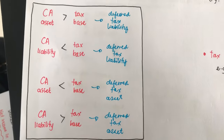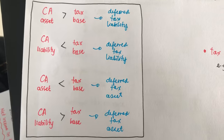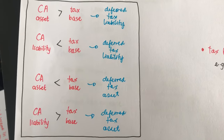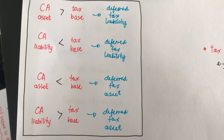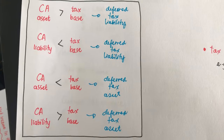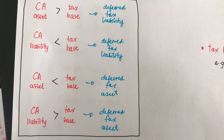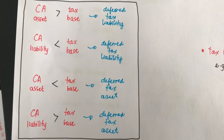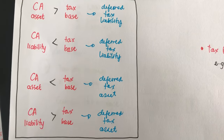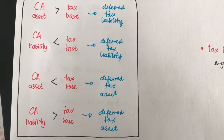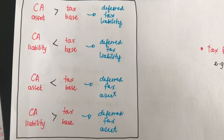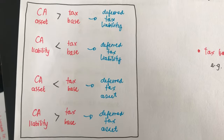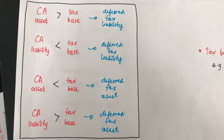The general rule is: if the carrying amount of an asset is greater than the tax base, we have a future taxable amount and therefore a deferred tax liability. If the carrying amount of a liability is less than the tax base, we also have a deferred tax liability. If the carrying amount of the asset is less than the tax base, we have a deferred tax asset. And if the carrying amount of a liability is greater than the tax base, we also have a deferred tax asset.